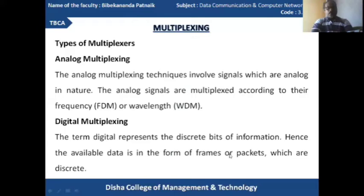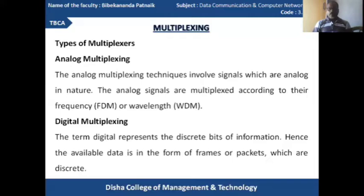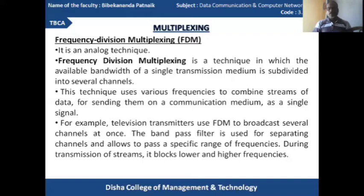Analog multiplexing involves signals which carry analog information, and the analog signals are multiplexed according to frequency (FDM) or wavelength (WDM). On the other side, digital multiplexing — the term digital represents discrete bits of information, that is, zeros and ones. Hence, the available data is in the form of frames or packets, and the bits are grouped to build frames or packets which are distributed from one end to another.